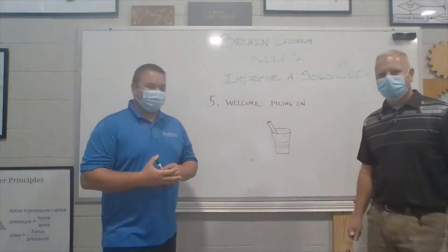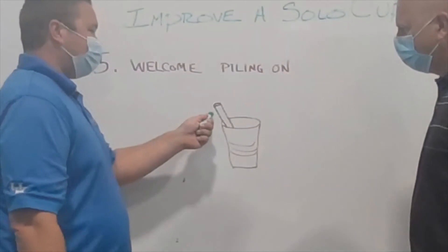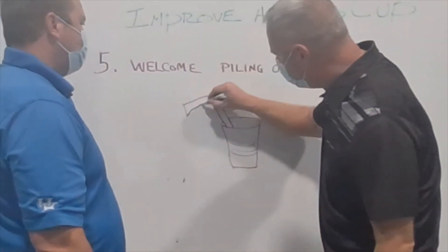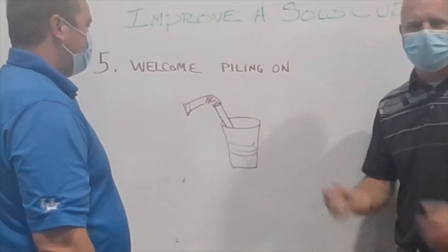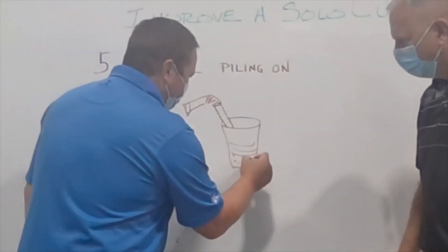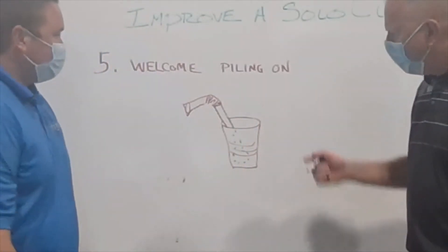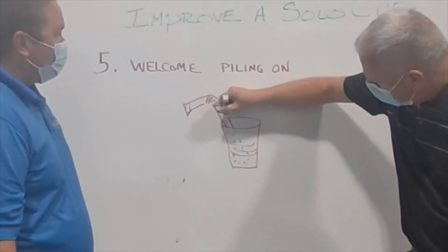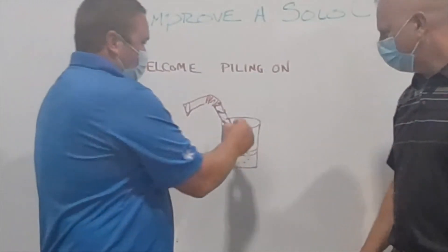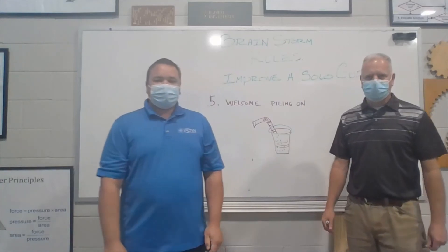Rule number five is called welcoming piling on, and it looks something like this: 'I think we should add a straw that's automatically built in.' 'That's a great idea — how about a bendy straw with a flexible joint?' 'Sometimes you're not just drinking — what if we add a spoon attached to the bottom so you can eat or drink?' 'How about we make the straw different colors so people can tell them apart?' 'We can also add a lid built into the straw so they don't get separated.' That's piling on.